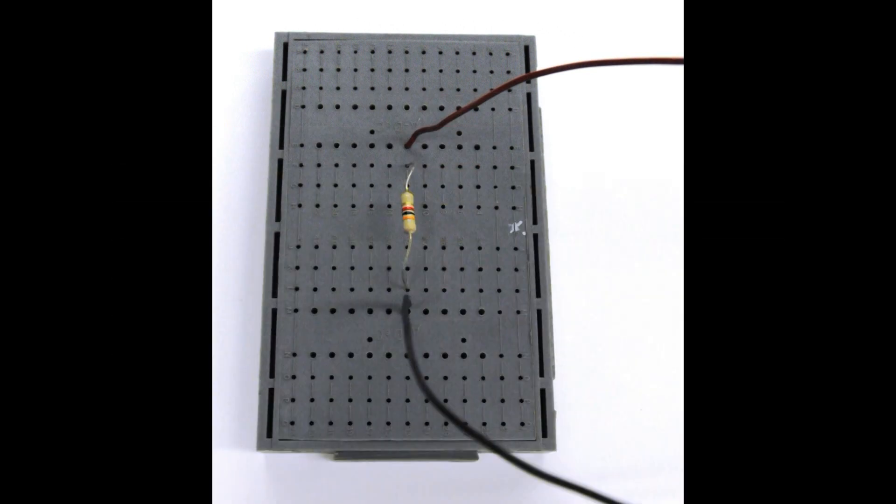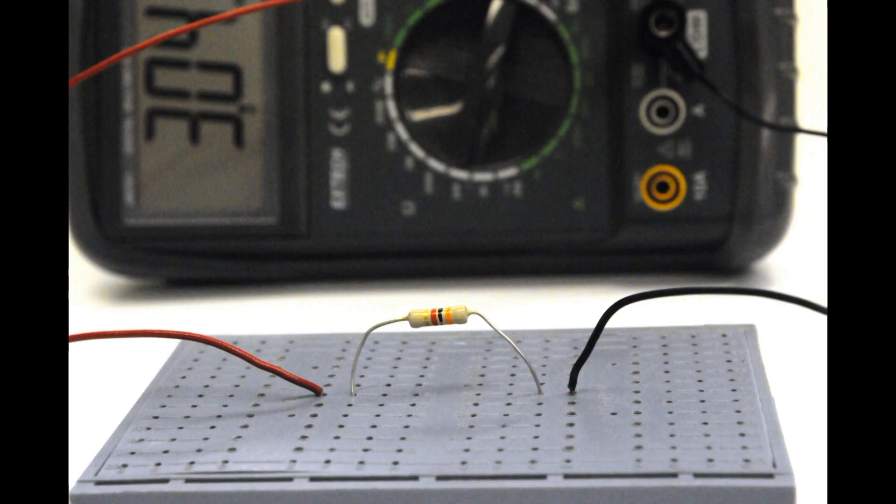The circuit boards have rows consisting of four holes in contact with one another, with gaps that are not connected. Long rows are also connected along the long sides of the board. Resistors are placed in the circuit board bridging the gap, and external connecting wires are placed in the same row as a resistor lead to make contact.